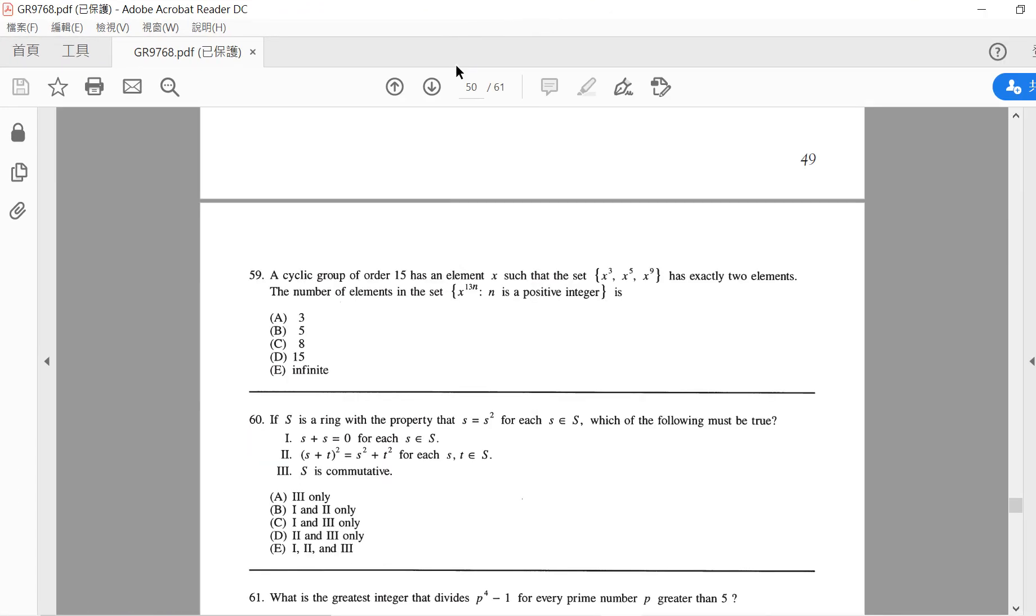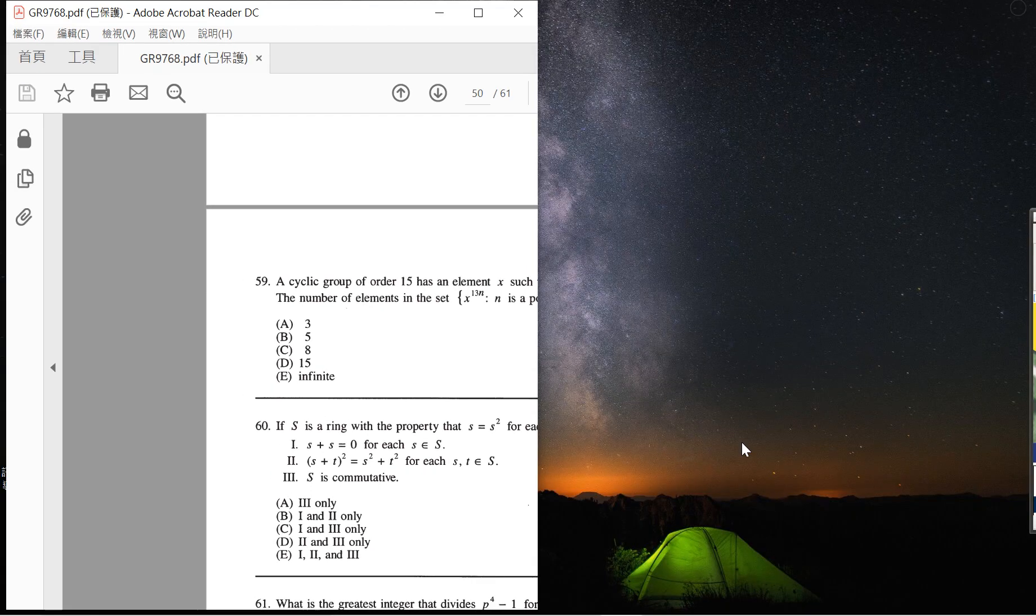Welcome guys, so today we are solving problem 59. Problem 59 is a little bit difficult. The question is: a cyclic group of order 15 has an element x such that the set {x³, x⁵, x⁹} has exactly two elements.